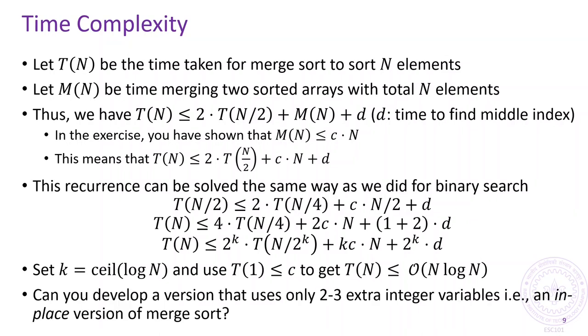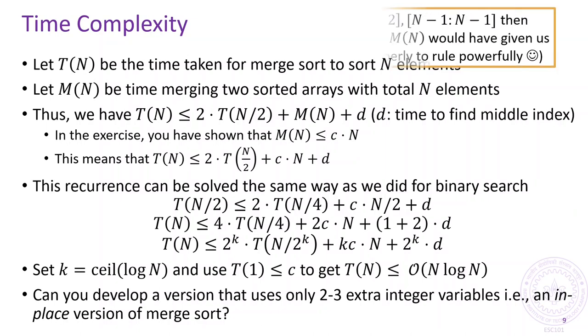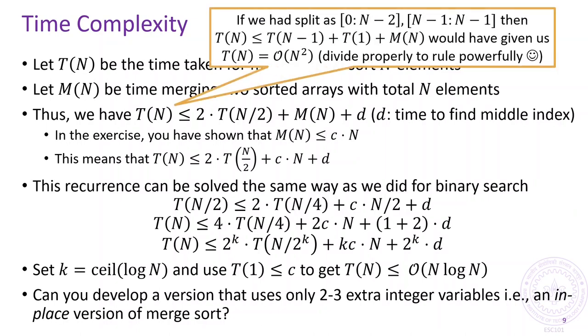Try creating an in-place version of merge sort by creating an in-place version of the merge operation. It is worth noting that if we do not split the array into two smaller arrays of roughly the same size, then the benefits of merge sort are lost. For example, if we split an array of size n into two arrays, one of size 1 and another of size n minus 1, then you can re-solve the recurrence relation to see that merge sort will have a much worse time complexity of order n squared.